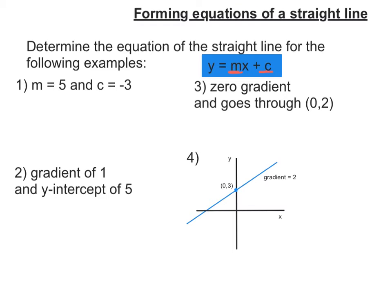So let's go through these examples. The first question says m equals 5 and c equals negative 3. Remember, our equation of a straight line is of the form y equals mx plus c. We know that m is 5, so it's y equals 5x. c is negative 3, so it's take away 3. So y equals 5x minus 3.